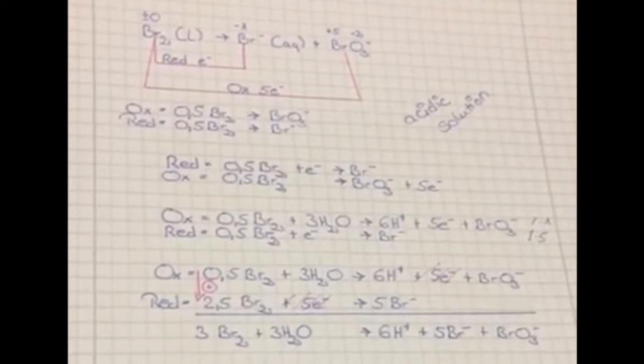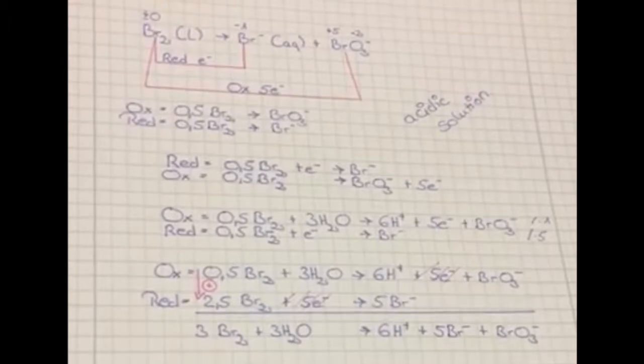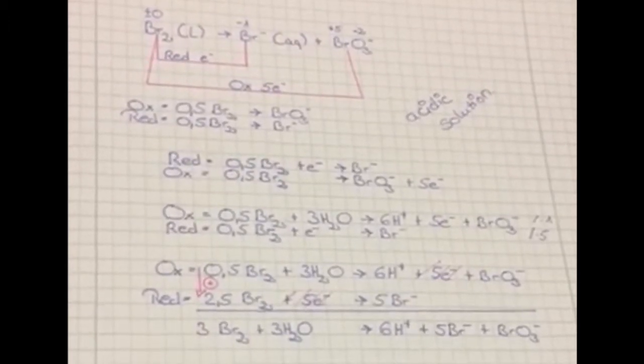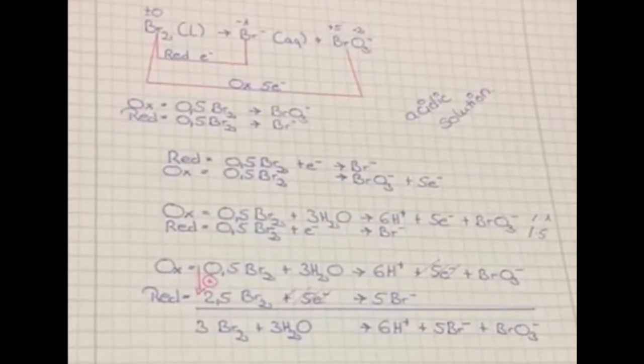Now we have to balance the half reactions. We can multiply the oxidation by 1 and the reduction by 5 to get the equal number of electrons. When you add these two together, the electrons can be eliminated.